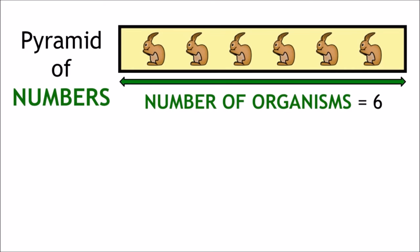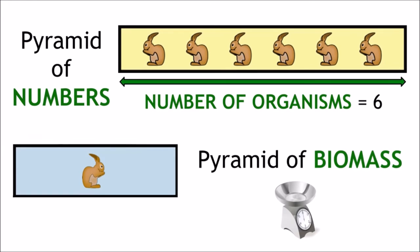In the pyramid of biomass, it shows the biomass of organisms, and a common unit for this is grams per metre squared.